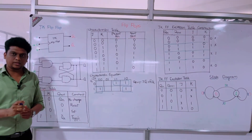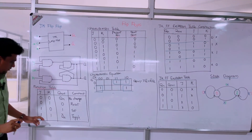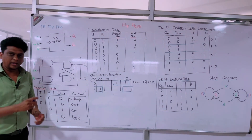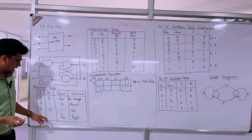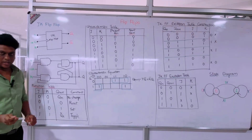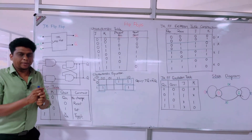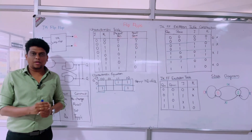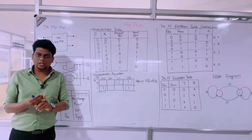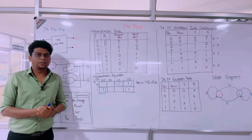The JK flip-flop overcomes the drawback of the SR flip-flop. In the SR flip-flop, whenever both inputs are 1,1 we get an indeterminate state. This is overcome in the JK flip-flop with the toggle condition — we get a complemented output. Compared to the SR flip-flop, the JK flip-flop performs three functions: setting to 1, resetting to 0, and complementing the input.